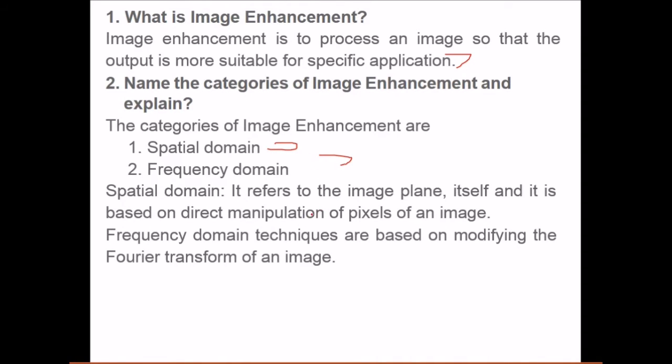Spatial domain refers to the image plane itself and it is based on direct manipulation of the pixels of an image. You assume the image to be a matrix of intensity values or brightness values, then performing actions on these values or pixels falls under spatial domain.